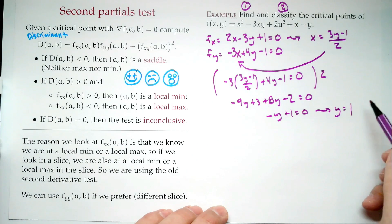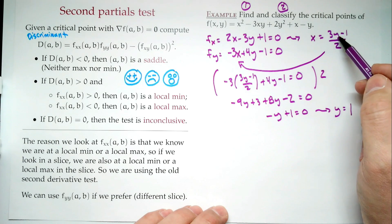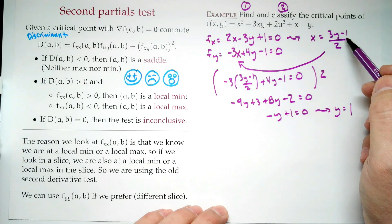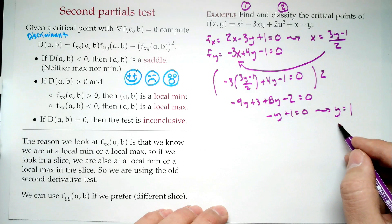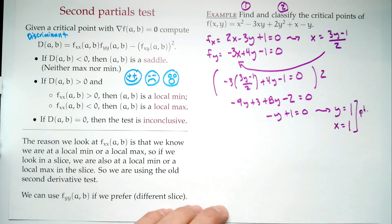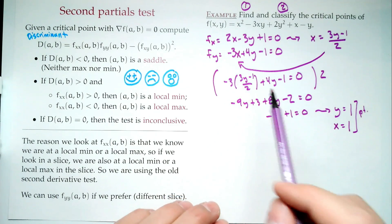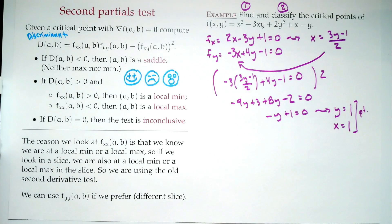Now that we know y = 1, substitute back to solve for x: x = (3·1 - 1)/2 = 2/2 = 1. So we get the critical point (1, 1). There's only one critical point. We've done step one — find. Now: classify.